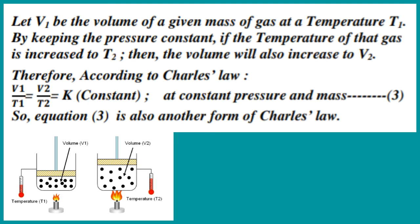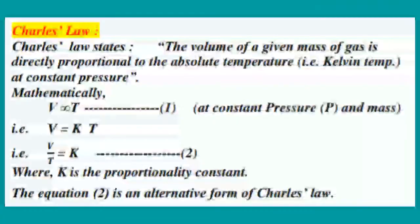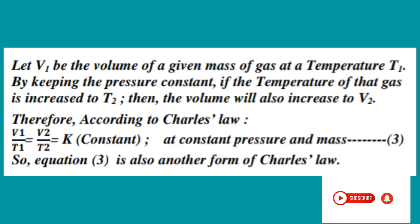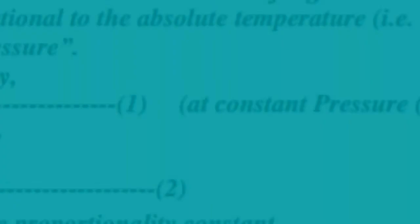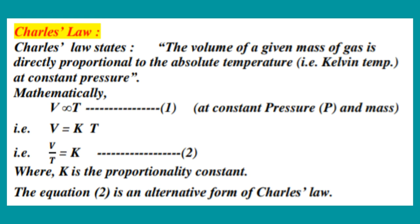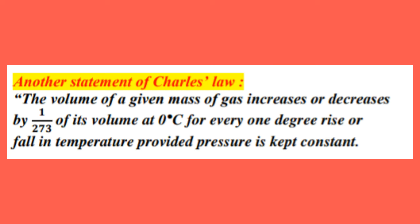This is the mathematical form of V directly proportional to T at constant pressure and mass. This is the mathematical form of V by T equal to K constant. This is the mathematical form of V1 by T1 equal to V2 by T2 equal to K constant. Charles's Law can also be stated as: the volume of a given mass of gas increases or decreases by 1 by 273 of its volume at 0 degree Celsius for every one degree rise or fall in temperature, provided pressure is kept constant.